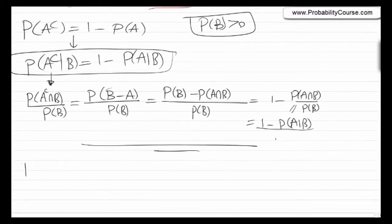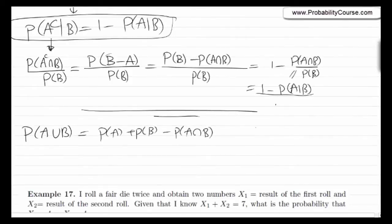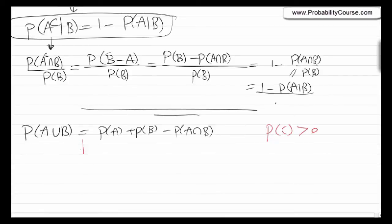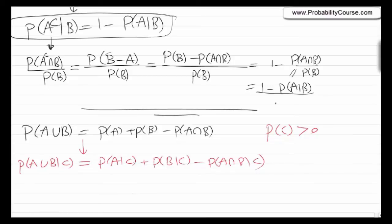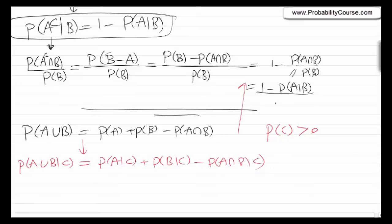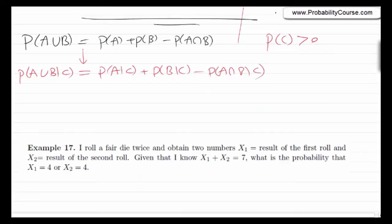For example, we have the formula P(A∪B) = P(A) + P(B) − P(A∩B). If P(C) > 0, we can condition both sides by C: P(A∪B | C) = P(A|C) + P(B|C) − P(A∩B | C). Now let's look at another problem to make sure we understand these concepts.